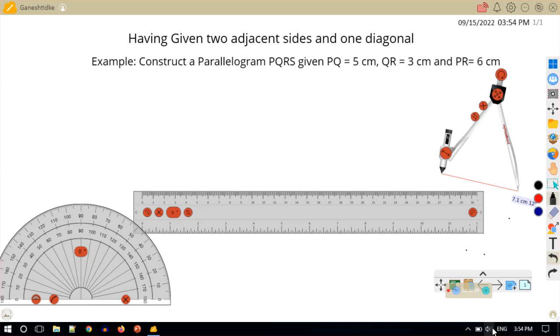So now in today's video, the case is that having given two adjacent sides and one diagonal. So here is an example. Construct a parallelogram PQRS given PQ is equal to 5 centimeter, QR is equal to 3 centimeter and PR is equal to 6 centimeter.